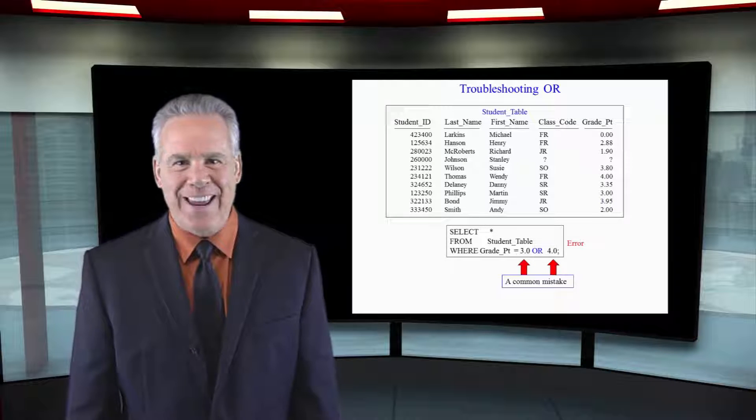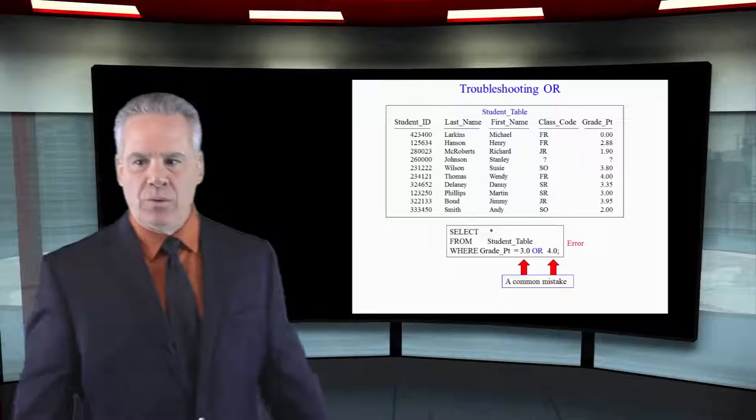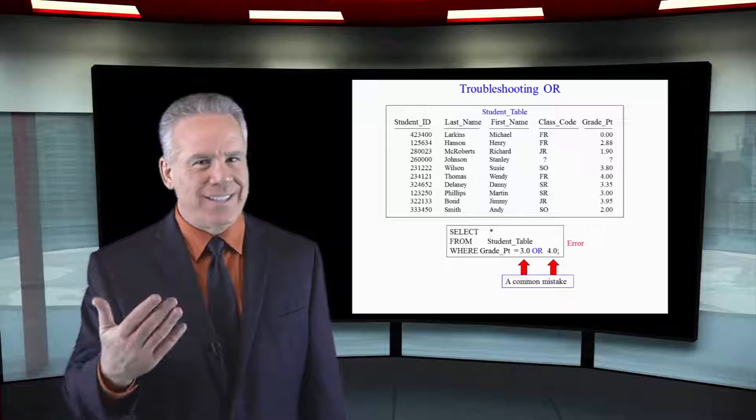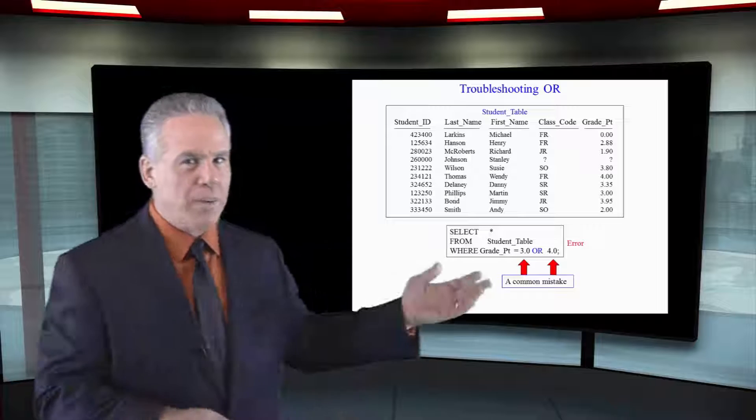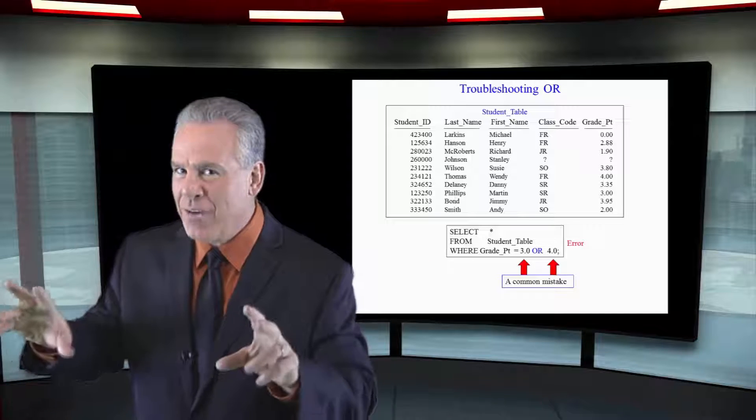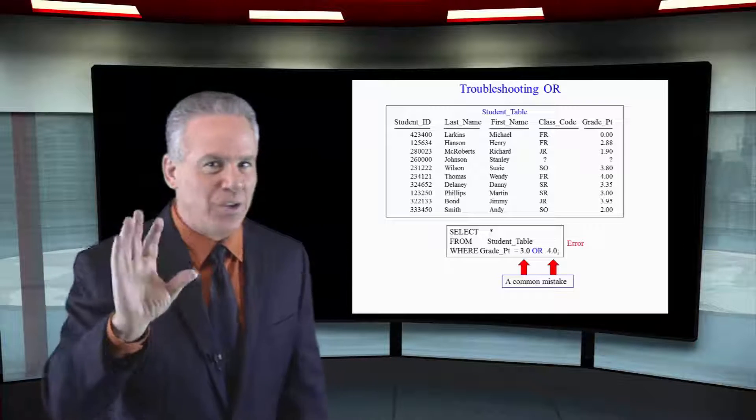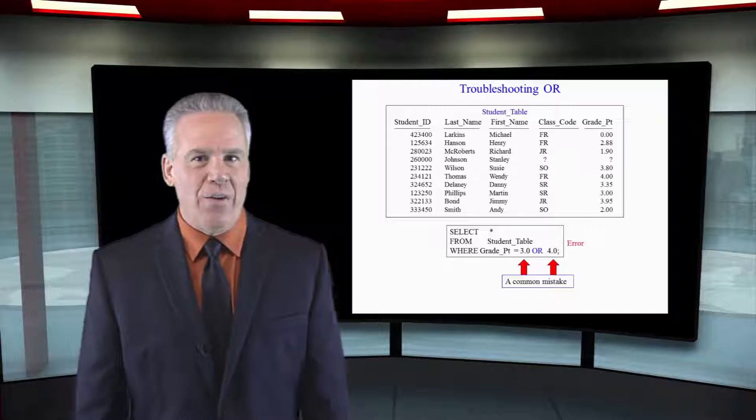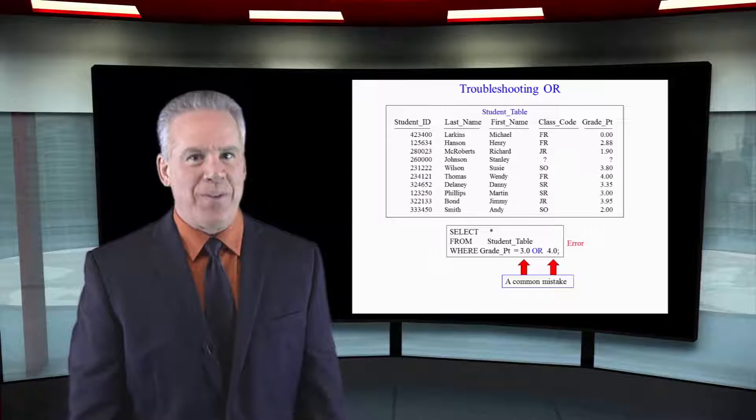Here's another mistake. Believe me, I made them all. Where you say, listen, I want to know where the grade point is equal to 3.0 or 4.0. Now, you would think that the system could handle that, but it cannot. Because, you know, you could say where the grade point equals 3.0 or first name equals Henry. So, it needs you to qualify the column each time. So, the only way this would work is if I said, where grade point equals 3.0 or grade point equals 4.0. Remember that.